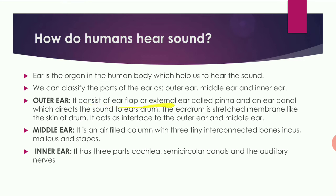The outer ear consists of the ear flap or external ear called the pinna, and an ear canal which directs the sound to the eardrum. The outer ear receives the sound waves and passes them through to the eardrum. The eardrum is a stretched membrane that acts as the interface between the outer ear and the middle ear.